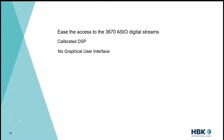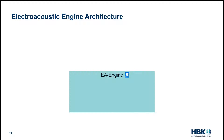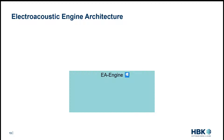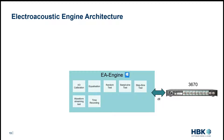The fourth principle is simple API. The HBK electroacoustic engine works on Windows, communicates with the 3670, and has different modules: I/O calibration for input or output channels, equalization, random tests, swept sine, step sine, waveform streaming to play calibrated speech or background noise, and time recording. Additionally it supports frequency analysis including spectra, phase spectrum, frequency response function, and octave-band analysis. You can also do THD and rub-and-buzz, with more features to be added.